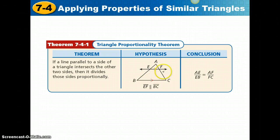So once again, we have line EF that is parallel to one side of a triangle, intersecting the other two sides, and it creates the proportion AE over EB equals AF over FC.